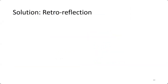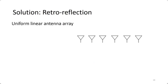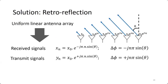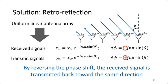Our solution is to use retroreflection. To explain the concept, consider a uniform linear antenna array receiving a signal x from direction theta. If we want to send the same signal back toward the same angle, by comparing the transmit and receive relations, we find that reversing the phase shift between elements causes the received signal to be transmitted back in the same direction.